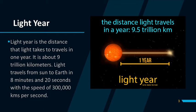It is about 9 trillion kilometers. Light travels from the sun to earth in 8 minutes and 20 seconds, with the speed of 300,000 kilometers per second.